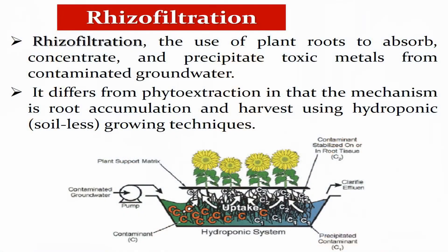We also have rhizofiltration. In this process, plant roots absorb contaminants, which may then be concentrated and precipitated — for example, toxic metals from contaminated groundwater. Rhizofiltration differs from phytoextraction in that it relies on root accumulation and harvest using hydroponic or soil-less growing techniques, whereas phytoextraction does not involve harvesting the plant.